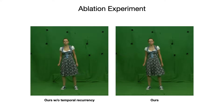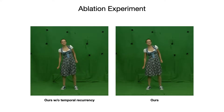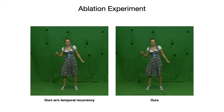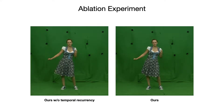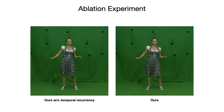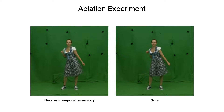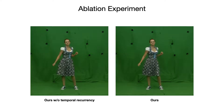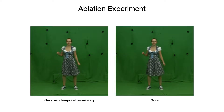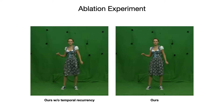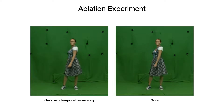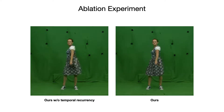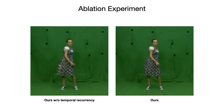Here we demonstrate the effect of sequential execution with recurrent backfeeding compared to a frame-by-frame generation setup. Only by including knowledge about the previous state of deforming garment is our method able to generate temporally coherent video results.